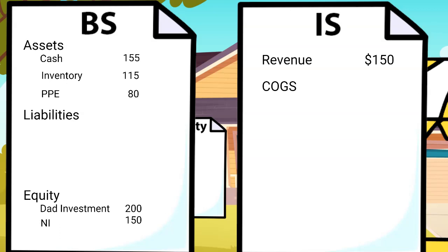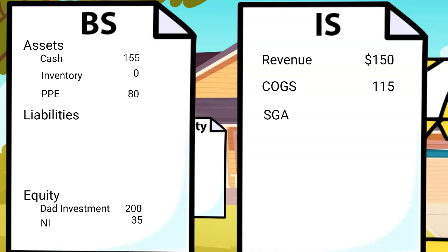Your inventory was $115 and you used all of it. Therefore, this is a debit to COGS and a credit to inventory. Technically, we would also book depreciation for your lemonade stand, but let's keep that lesson for another day. Now, what about those candy bars? We could put them in selling, general, and administrative expenses, or SG&A. So we would debit SG&A and credit cash. Wait, you can expense that? Well, yeah — you used company funds. So that's it for your transactions. You can see your net income is $30, which is the amount equity has increased on the balance sheet. Everything balances.